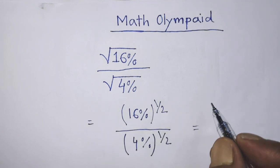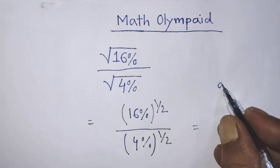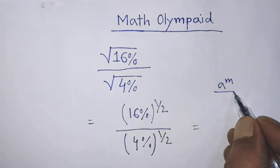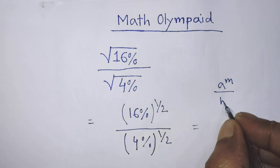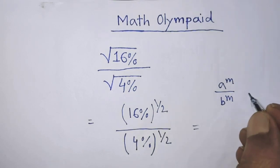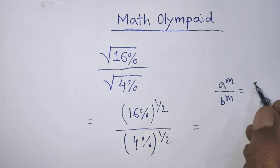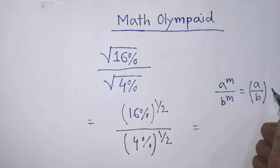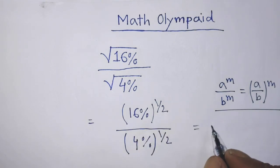To simplify this algebraic expression, we have to apply the formula: a to the power m over b to the power m is equal to a over b whole to the power m.